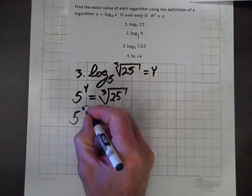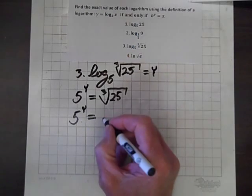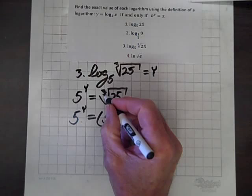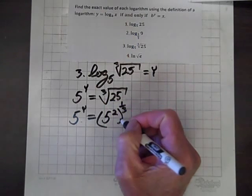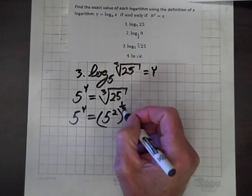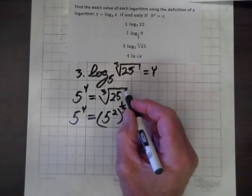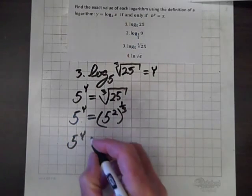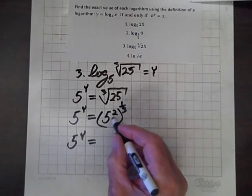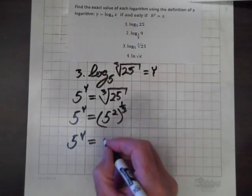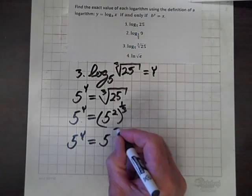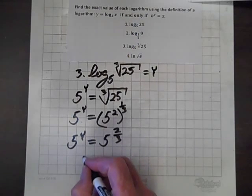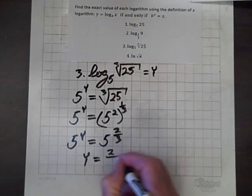We can rewrite that in a more friendly form: 25 is the same as 5 squared, all raised to the 1/3 power. Anything raised to the 1/3 power corresponds to the cube root of that thing. So we have 5 to the y equals, and by the law of exponents, we find the product of 2 and 1/3, giving us 5 to the 2/3. So the only way this is possible is if y equals 2/3.